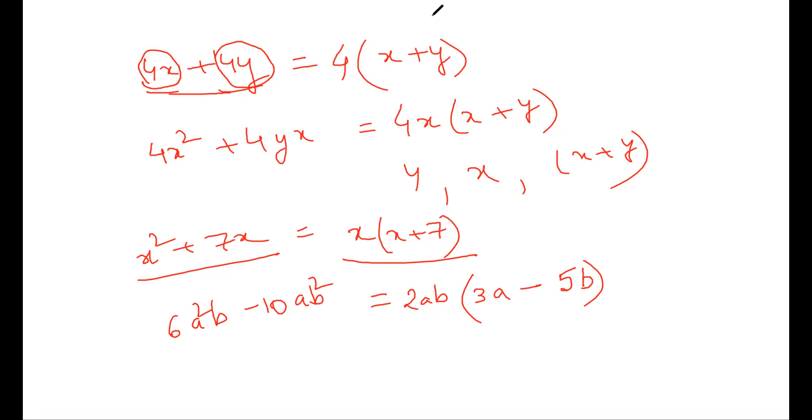That's basic factorization by taking things common. Now we move to the next level — quadratic expressions — and use algebraic identities. A quadratic expression has the highest degree of two. We find the degree of each term by adding the powers of all variables in that term; the highest degree term gives the degree of the entire expression.